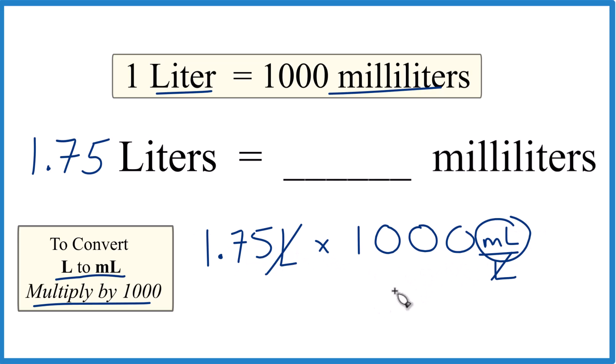1.75 times a thousand, that's 1,750, and the units are milliliters. So in answer to our question, 1.75 liters equals 1,750 milliliters.